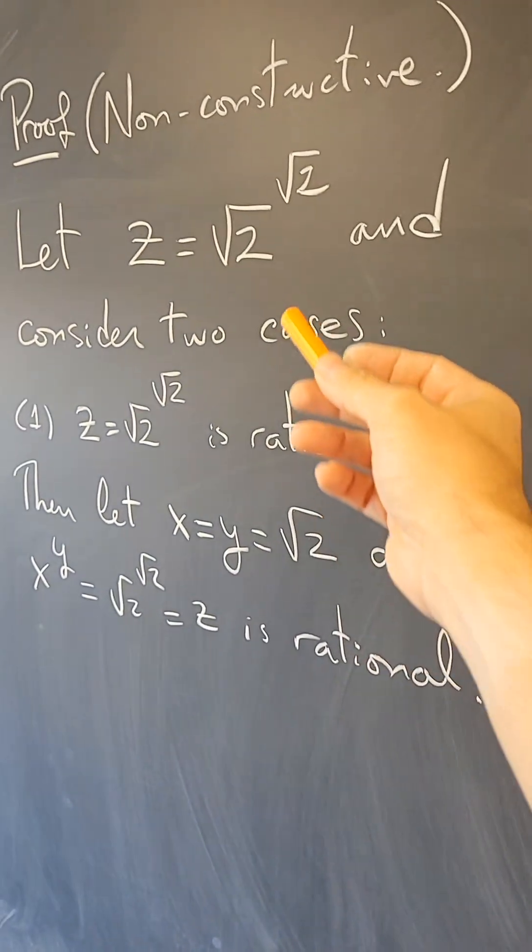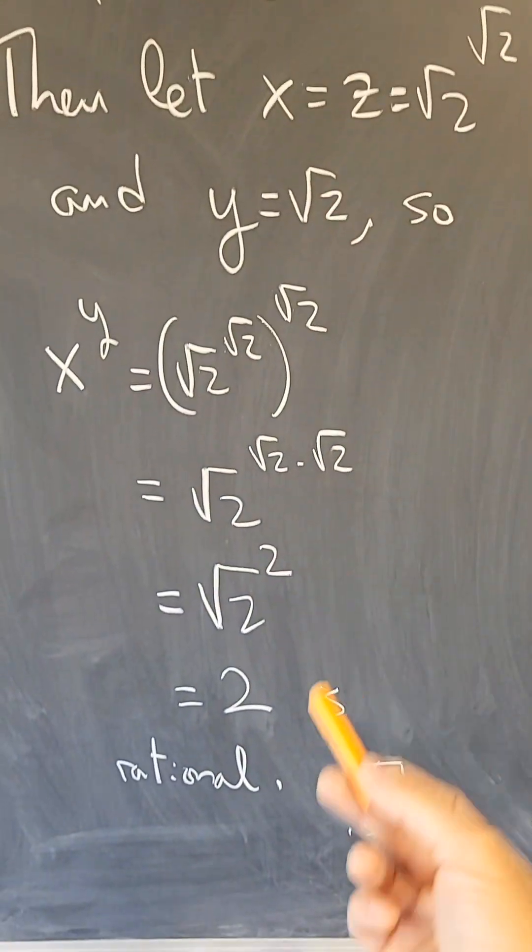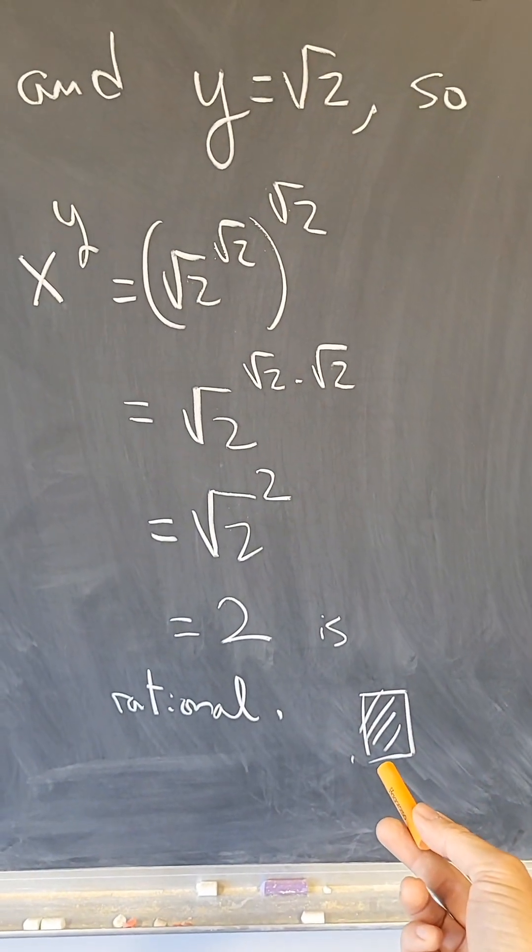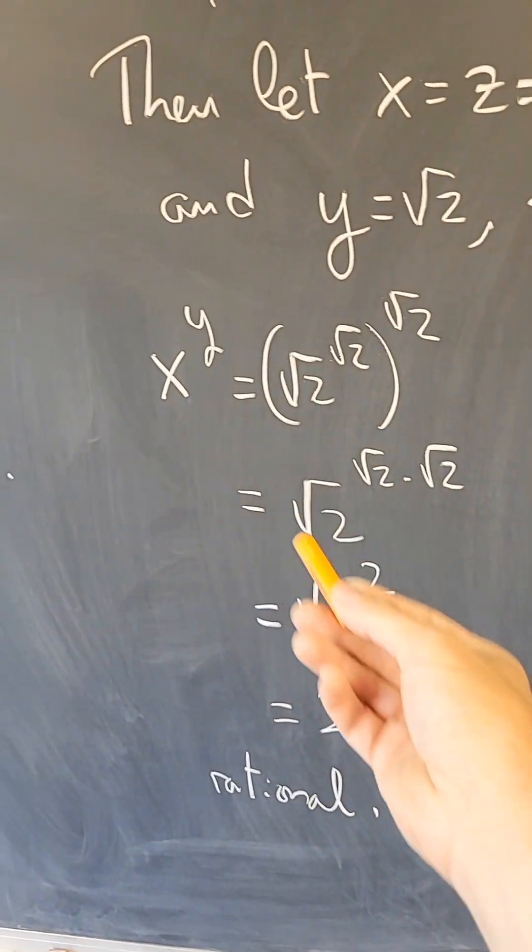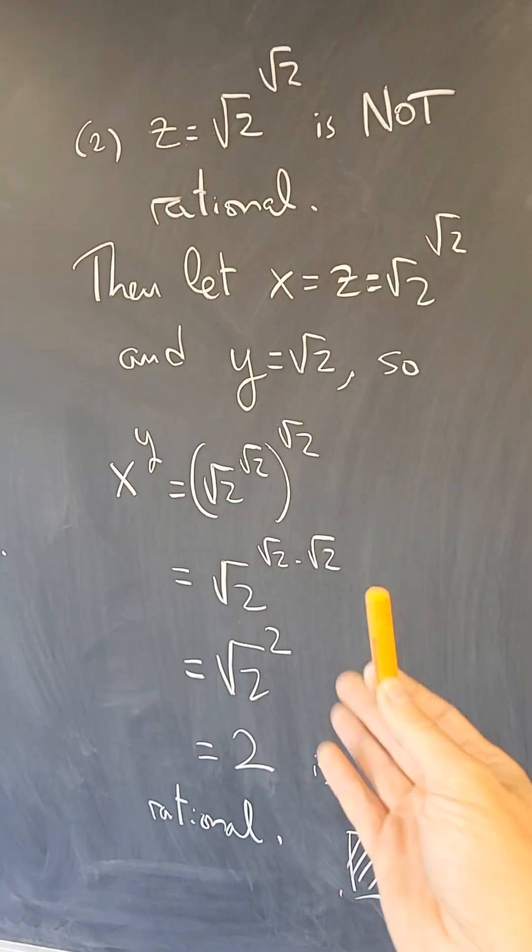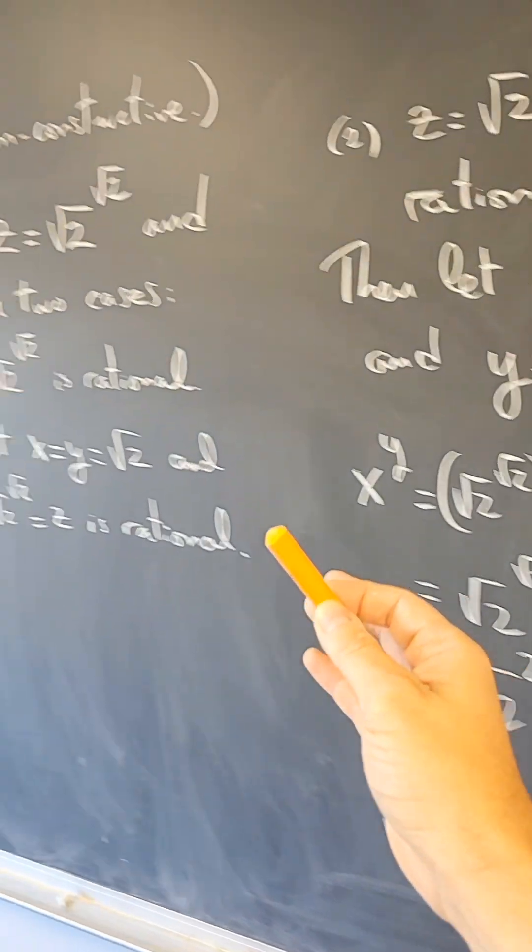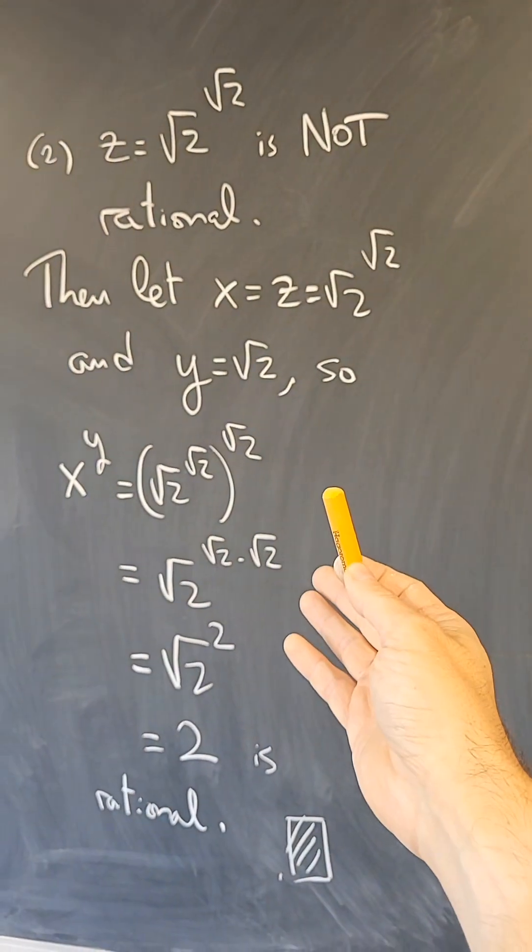In both cases, whether this is a rational number or this is an irrational number, I win. And therefore, I've proved my theorem because in both cases, I have found x and y.